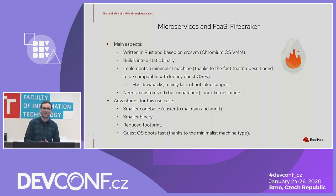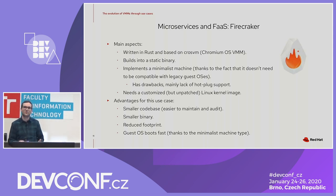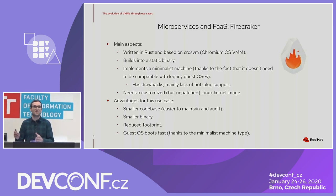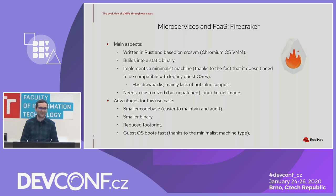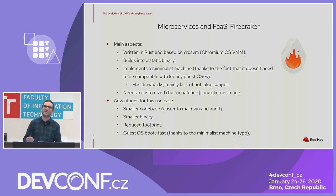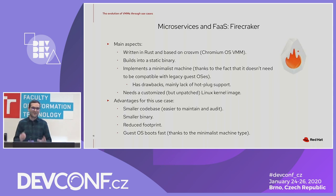Let's look at some highlights of Firecracker. Firecracker is written in Rust and based on CrosVM, the Chromium OS virtual machine monitor. It builds into a static binary, which is nice because it allows you to statically analyze the binary, see what syscalls it can potentially make, and then create a very precise seccomp filter for the binary. It implements a minimalist machine type — for example, it doesn't implement ACPI, and instead of PCI it implements MMIO as transport.